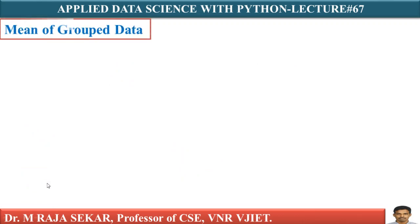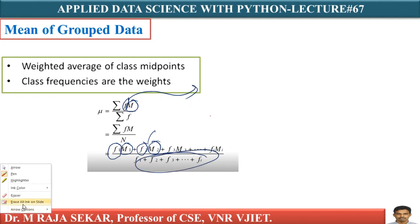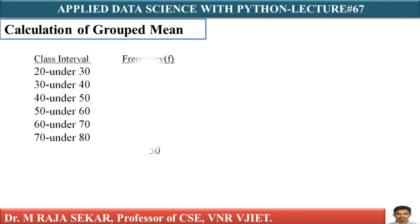Now, mean of grouped data. This mean of grouped data is indicated by mu. This f is known as frequency, m is known as class midpoint. f1 is frequency of first class, M1 is midpoint of first class. F2 is frequency of second class, M2 is midpoint of second class, and so on. We will analyze this.